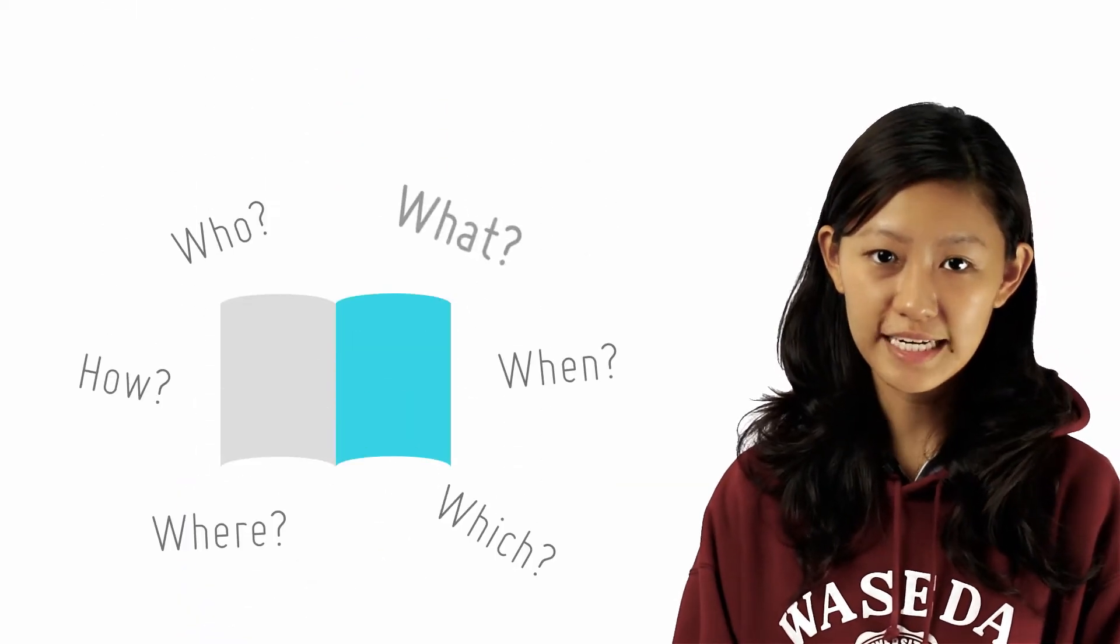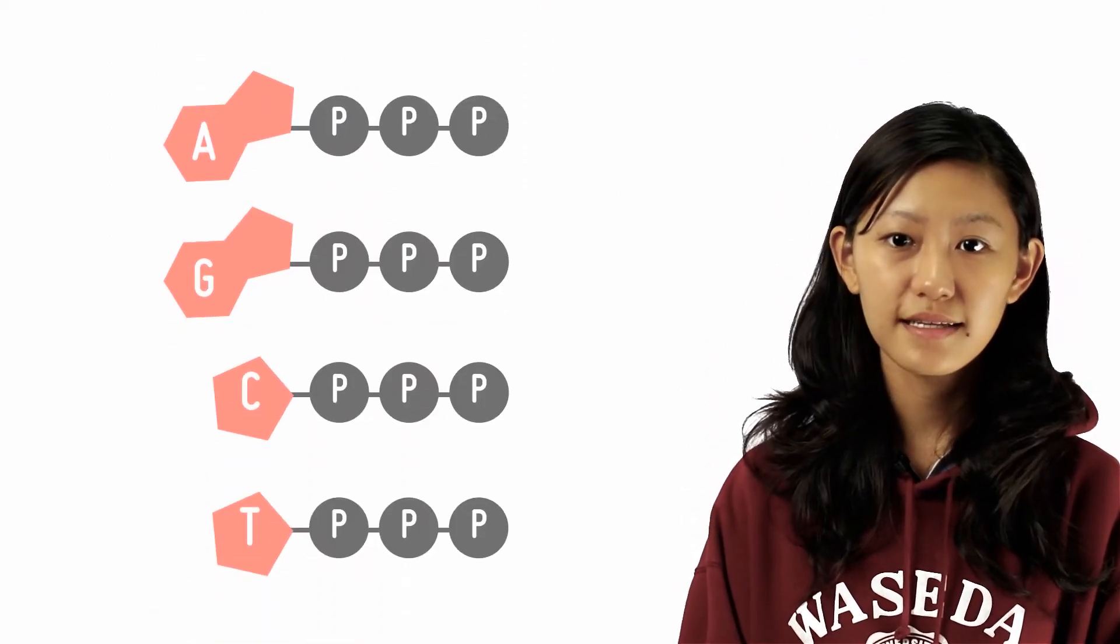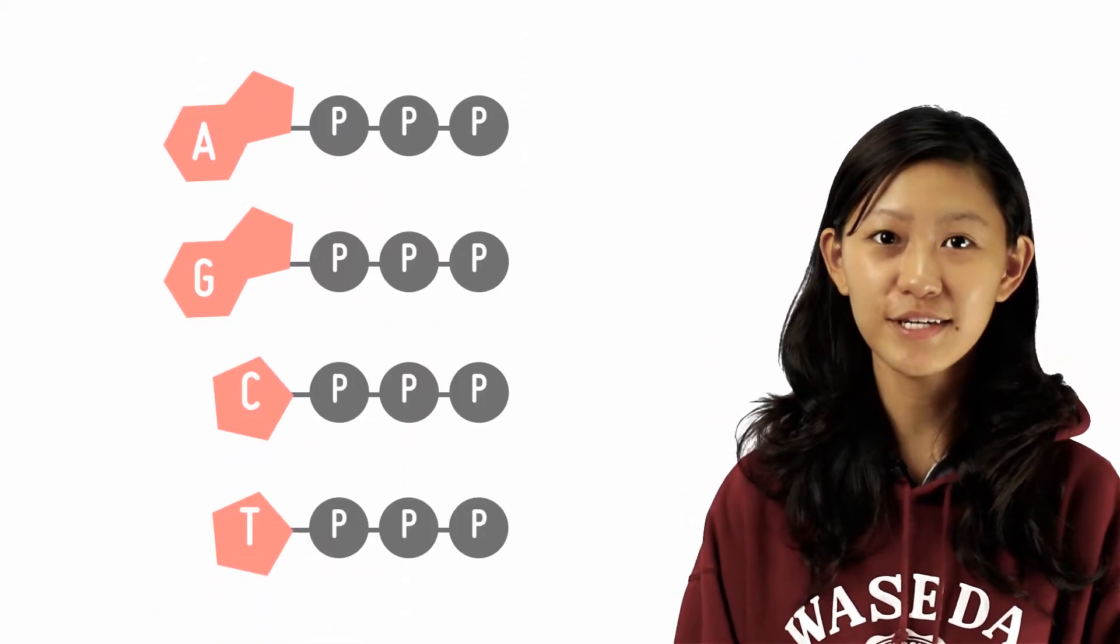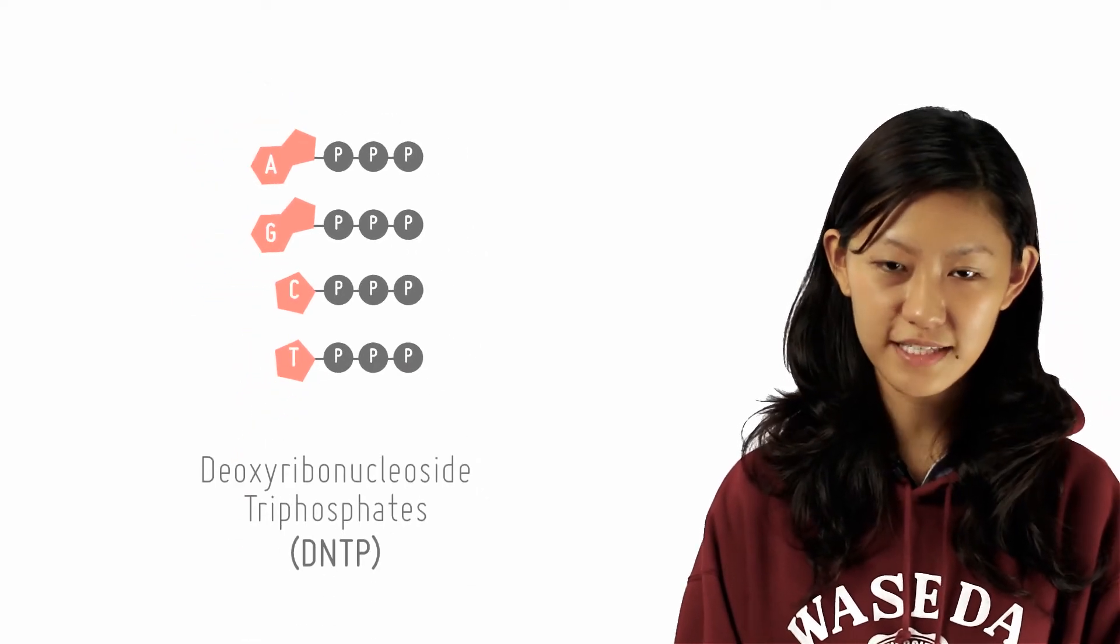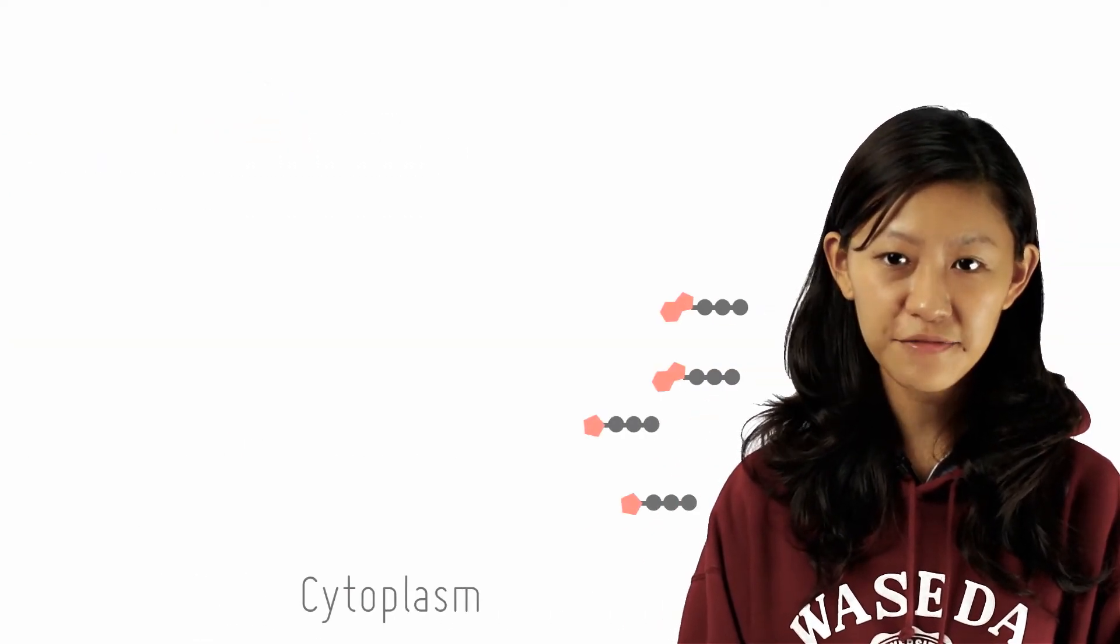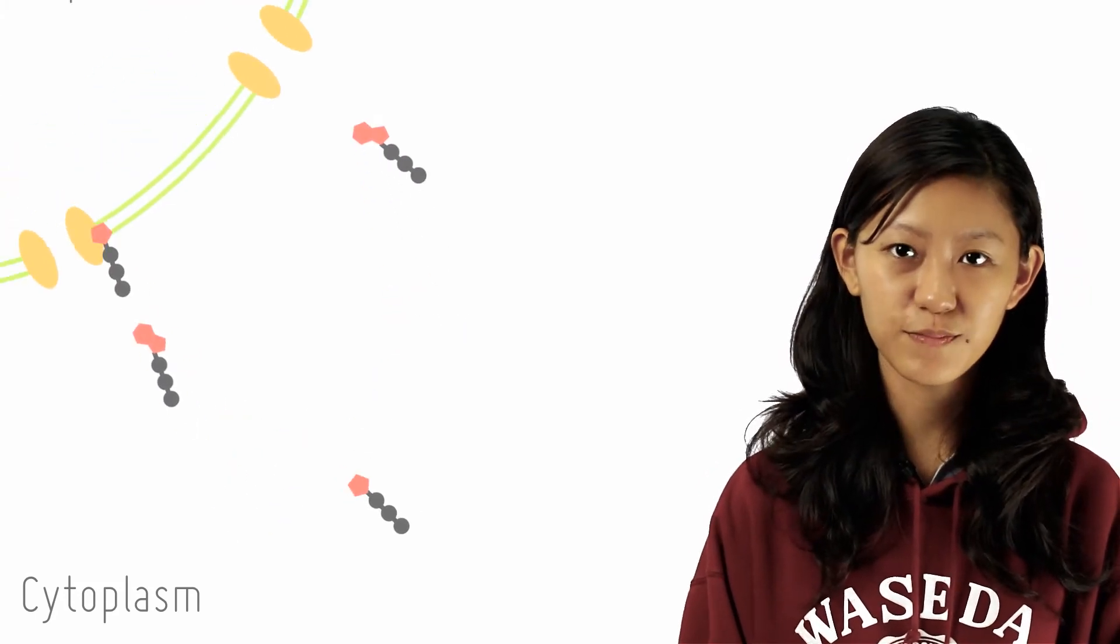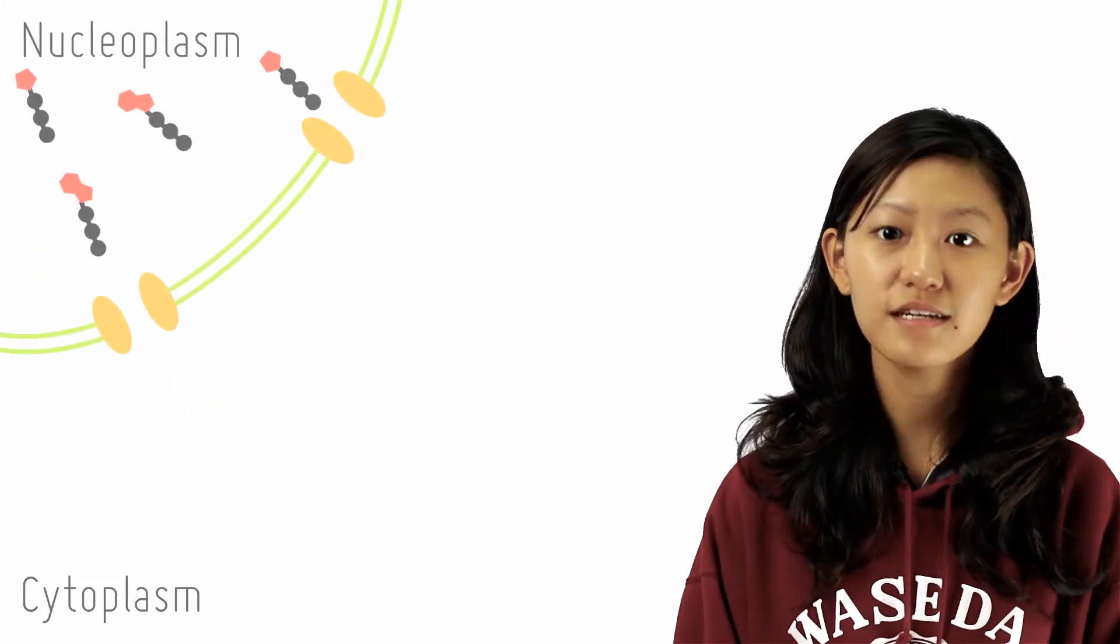What material is used for DNA replication? There are the four alphabets that I have no doubt you are more than familiar with. These deoxyribonucleoside triphosphates, or DNTP for short, are manufactured in the cytoplasm and transported into the nucleoplasm via nucleopause.